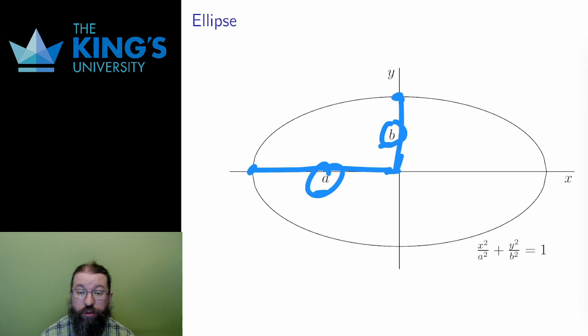These two numbers also show up in the equation of the ellipse as denominators. The general equation is x squared over a squared plus y squared over b squared equals one.